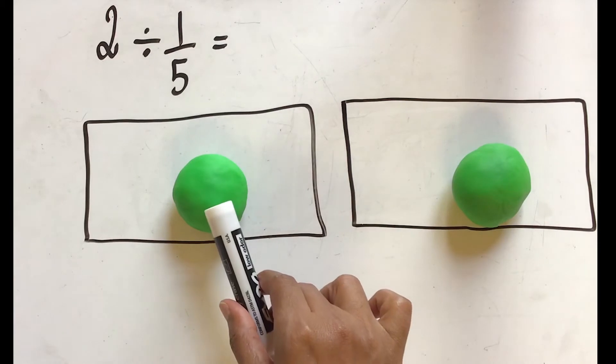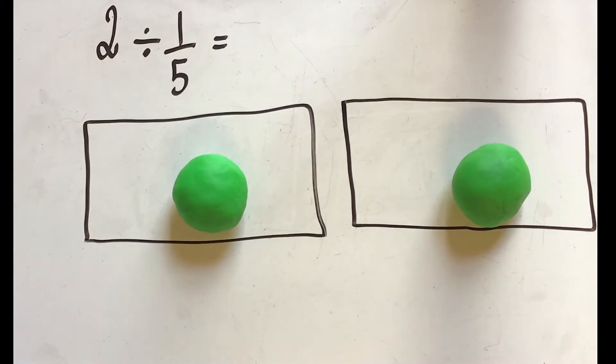Dividing it into one-fifth, let's take the first ball of Play-Doh and divide them into fifths.